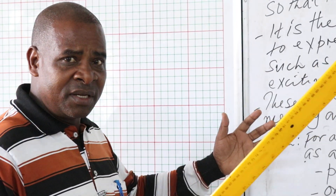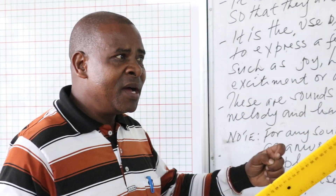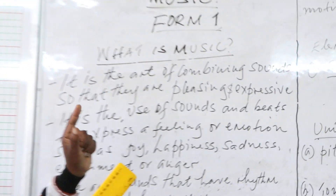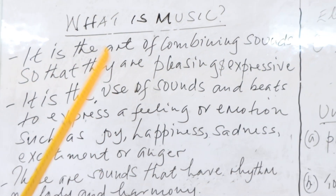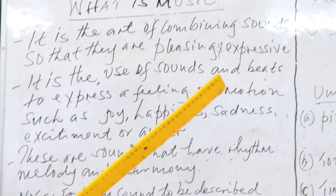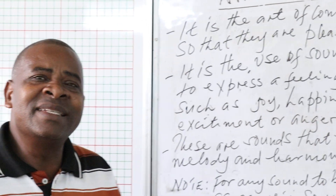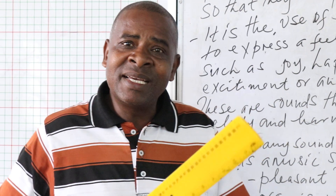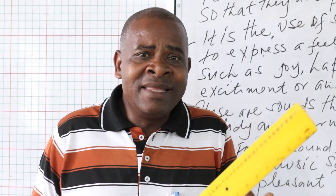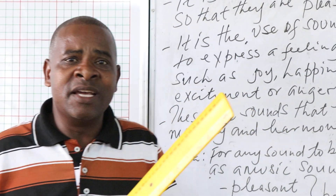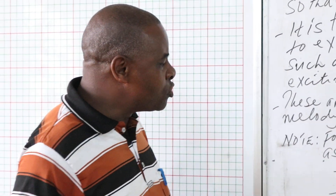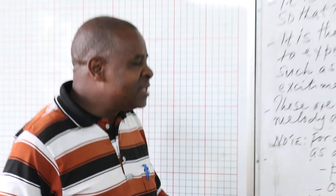That's all about the definition. And remember, I take you back to the first definition whereby we describe music as an art. So when you talk of art here, art simply means creativity. So music is all about creativity. If it's an art, then music is created, music is made.